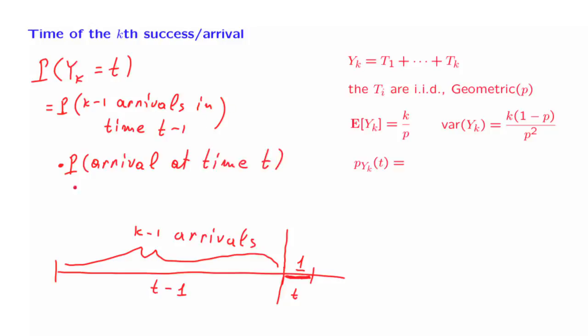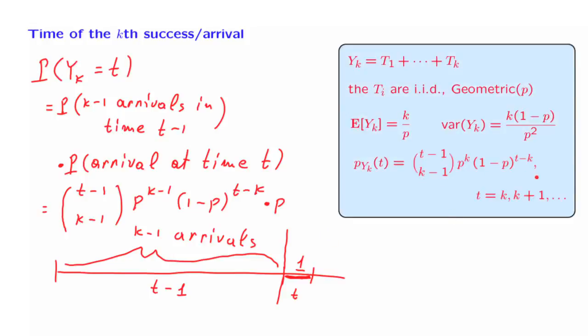Now, the first probability is given by the binomial formula. In t-1 time slots, we want to have k-1 arrivals. And the binomial formula gives us an exponent, p to this power, times 1-p to the power that's the difference of these two numbers, which is t-k. And then, finally, we multiply with the probability of an arrival at time t, which is equal to p. This p will cancel the exponent of minus 1 up here and leads us to this formula for the probability that the k-th arrival happens at time t.